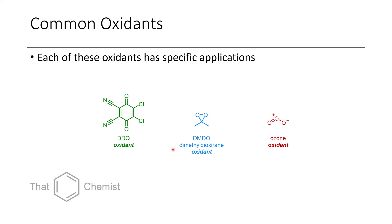Before we get into the main material today, we're going to talk about three reagents: DDQ, DMDO, and ozone. These three reagents are all specific oxidants with specific applications. They're worth being familiar with when you hear these abbreviations because they're used all the time. DDQ is commonly used for deprotecting certain oxidatively labile functional groups or protecting groups, such as certain benzyl ethers, which would be easily cleaved with DDQ. DMDO is a reagent used to synthesize epoxides. And ozone is a reagent commonly used to cleave olefins into aldehydes or ketones.